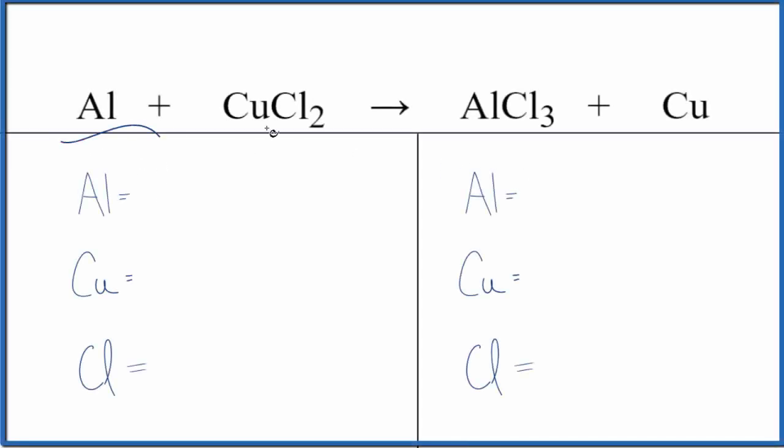Let's balance the equation Al plus CuCl2, aluminum and copper II chloride. We'll also look at the type of reaction and the states for each of the substances.